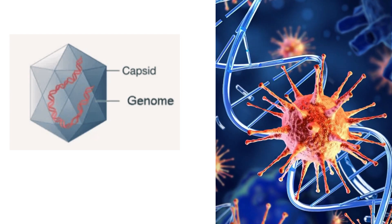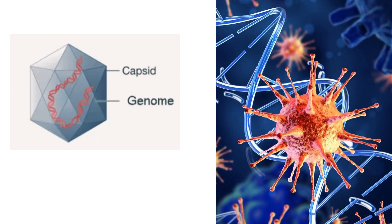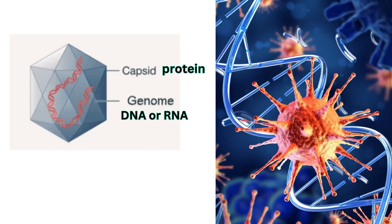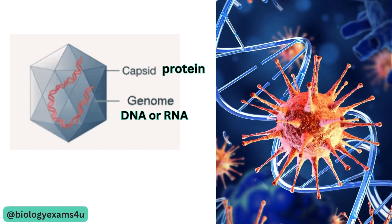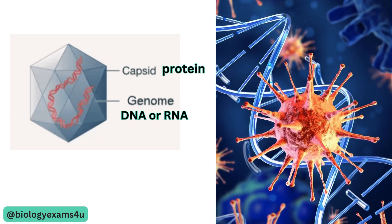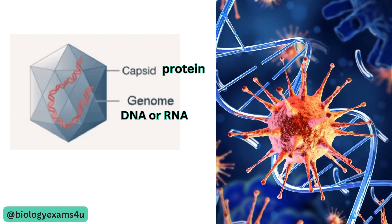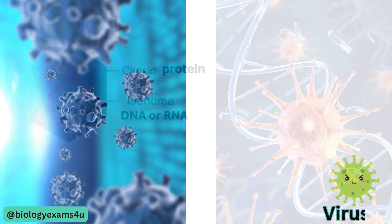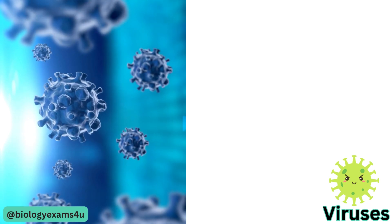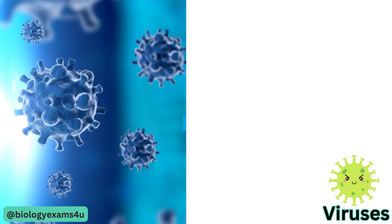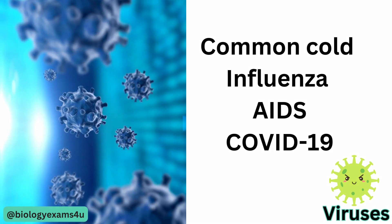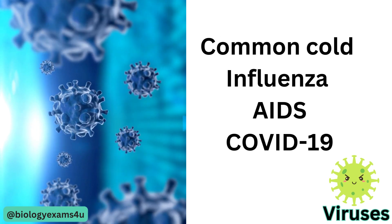Viruses are made up of two main components: a genetic material that can be either RNA or DNA, and a protein coat. The genetic material contains the instructions for building new viruses, and the protein coat protects the machinery and produces new viruses. Viruses can cause a wide range of diseases including the common cold, influenza, AIDS, and COVID-19.